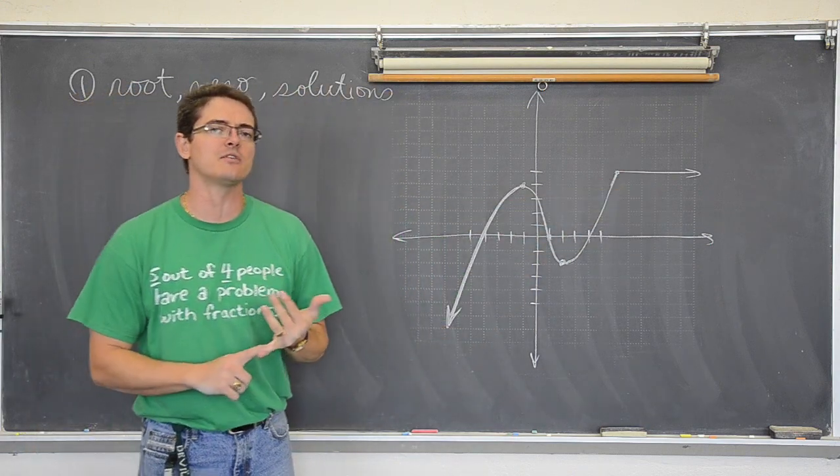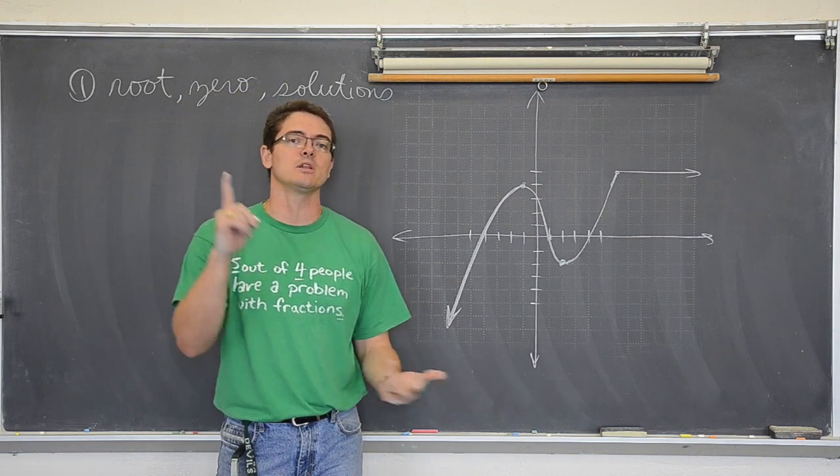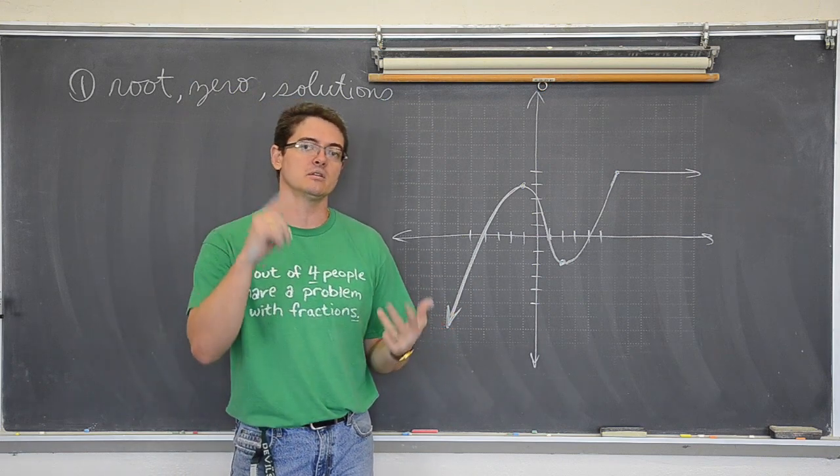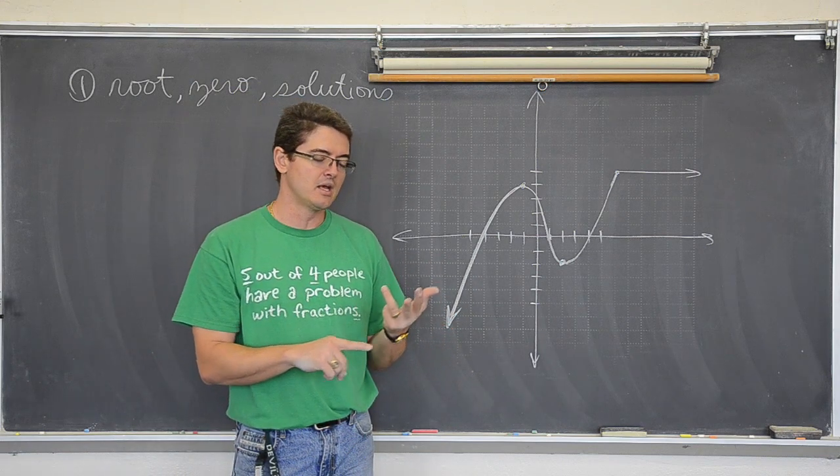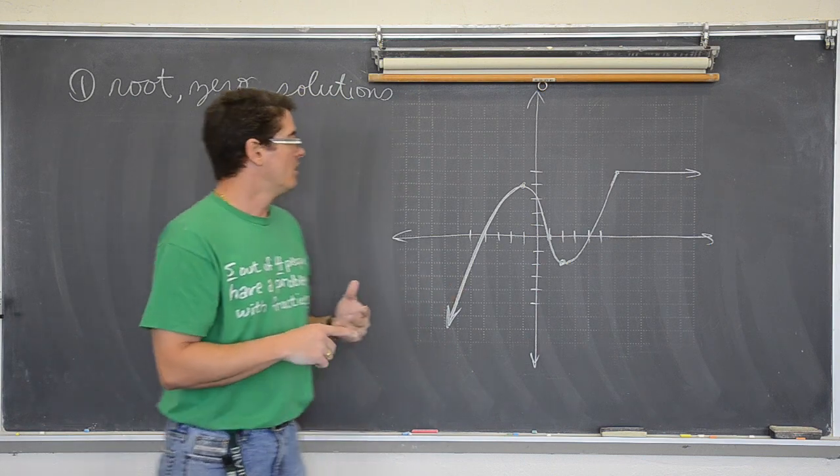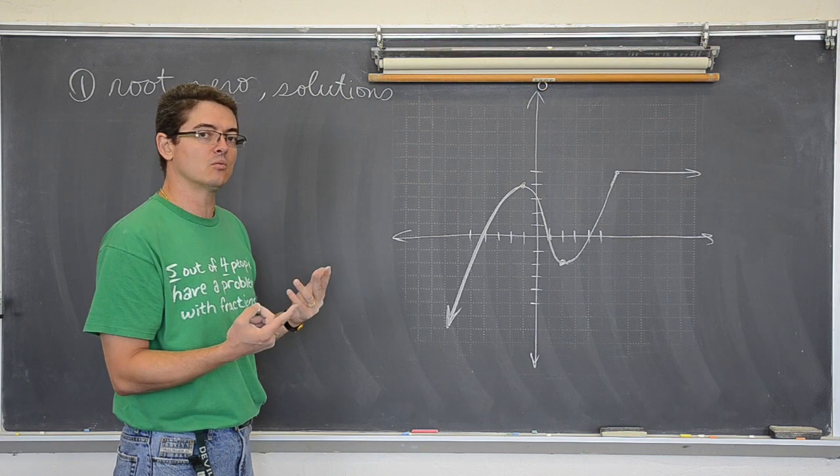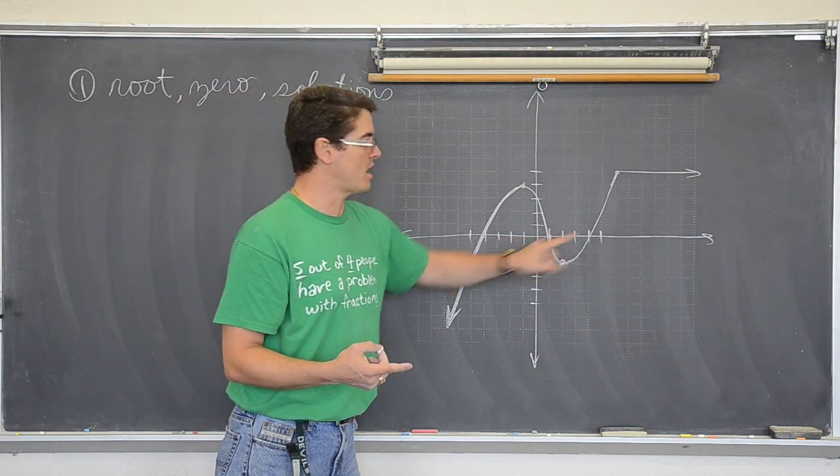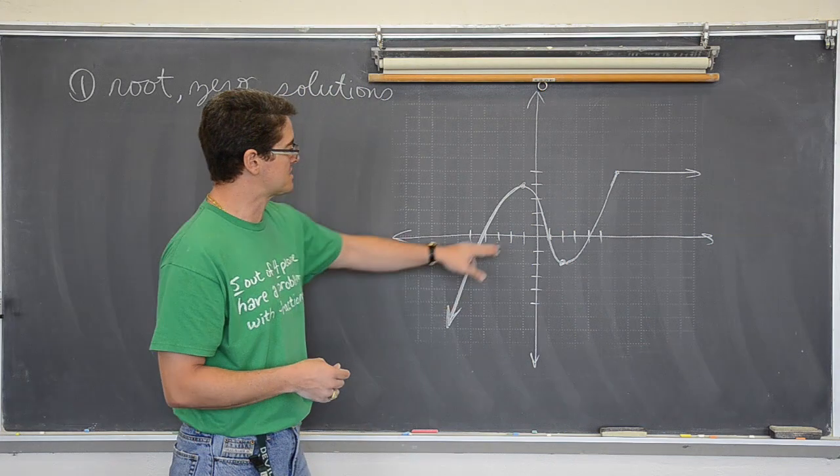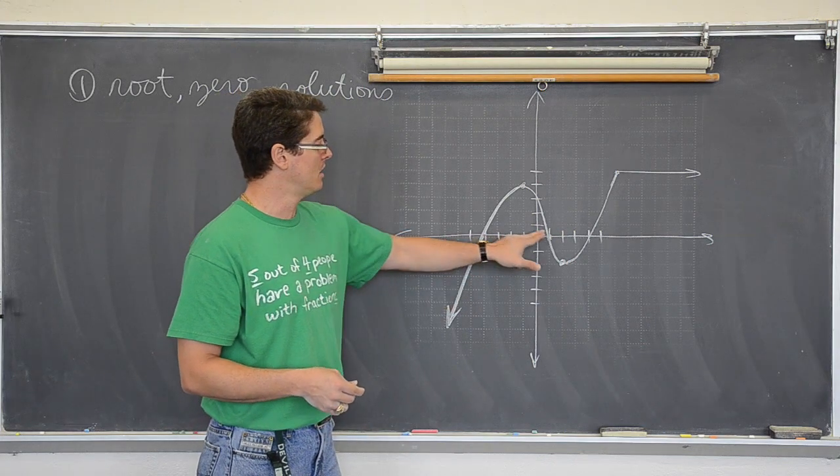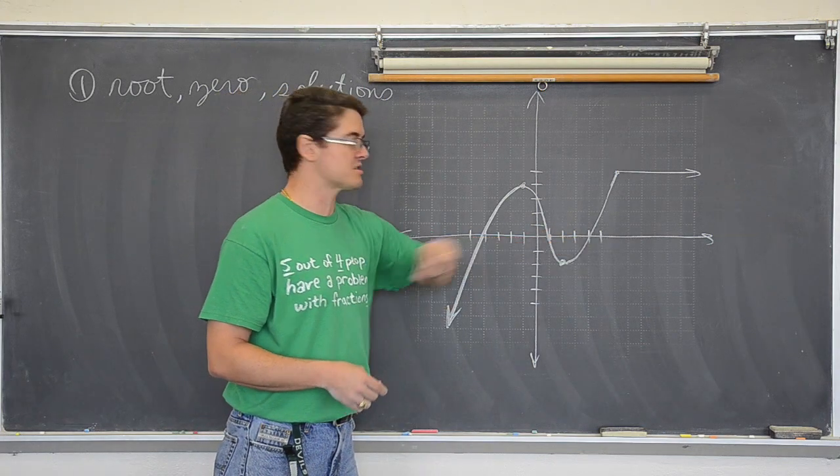You find solutions all the time. Every time you solve an equation, use a quadratic formula, use synthetic division, you are looking for solutions, factoring. What do you find when you find a solution to an equation? Well graphically what you are finding is where the graph crosses the x axis. This graph crosses the x axis at negative four, one, and positive four.